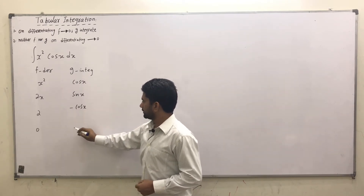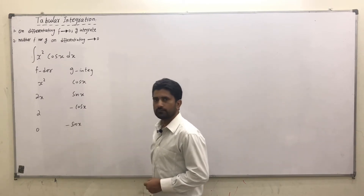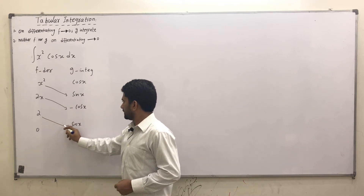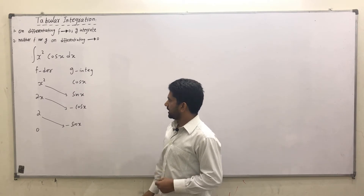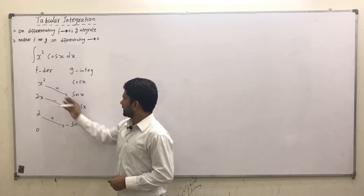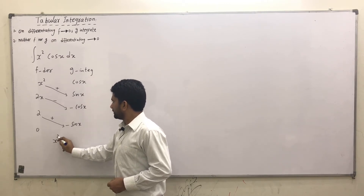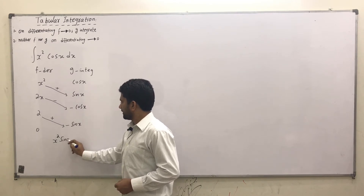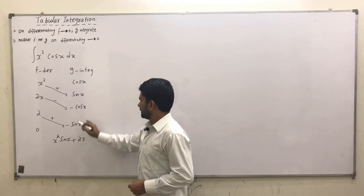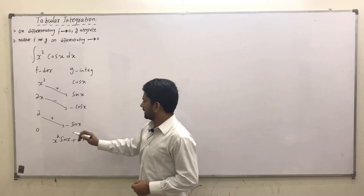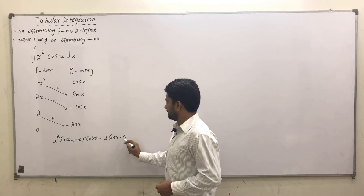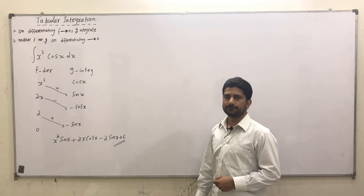The integral of minus cos(x) is minus sin(x). We match them: first with second, second with third, and third with fourth, writing alternating signs — positive, then negative, then positive. Multiplying: the first term is positive x² sin(x), the next term is minus times minus, giving plus 2x cos(x), and the last term is plus times minus, giving minus 2 sin(x), plus a constant. This is our required solution.